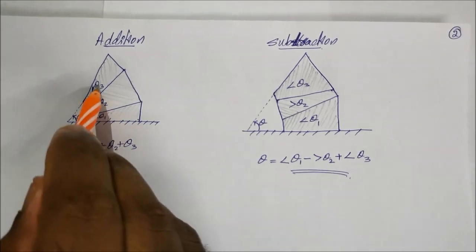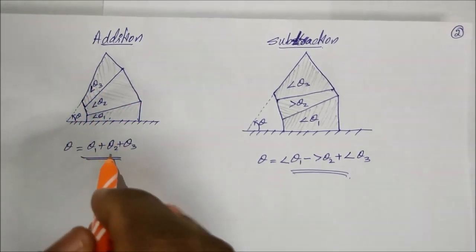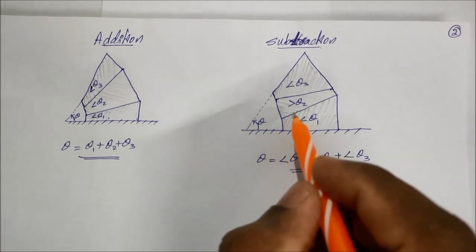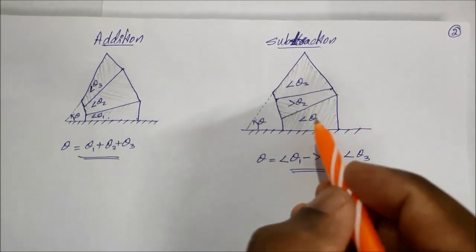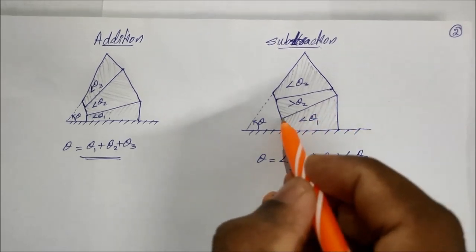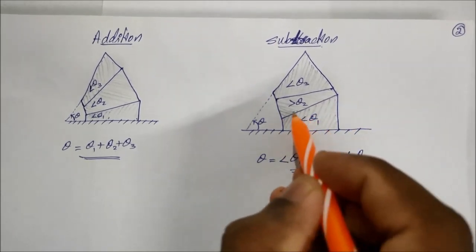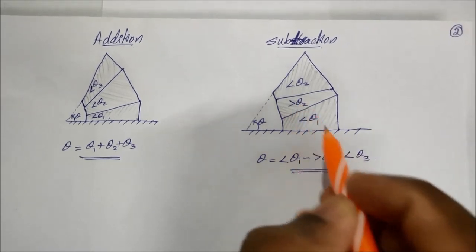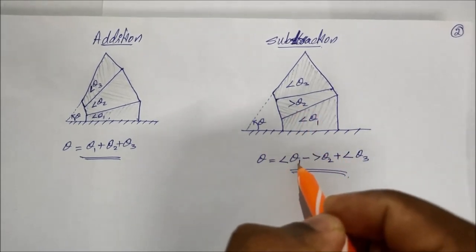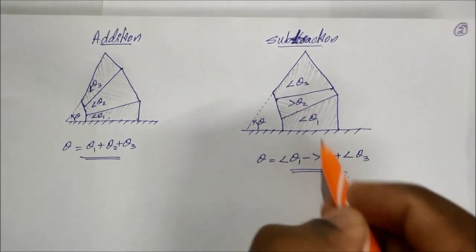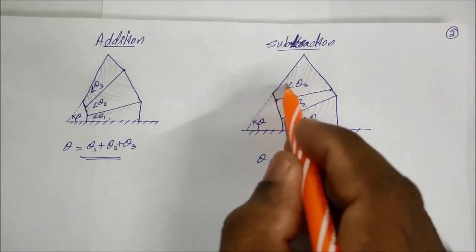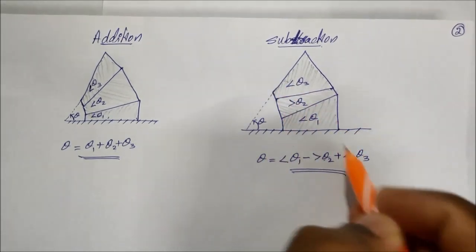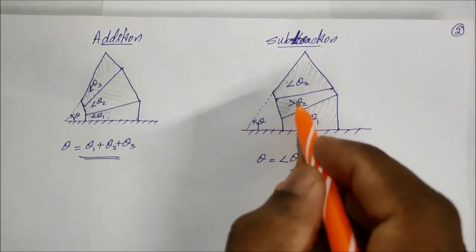The total effective angle theta equals theta 1 plus theta 2 plus theta 3 for the addition case. For subtraction, the first angle gauge gives theta 1 on the left side, and theta 1 minus theta 2 gives the left side angle. The addition of theta 3 is then applied.